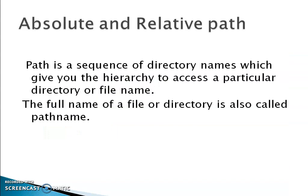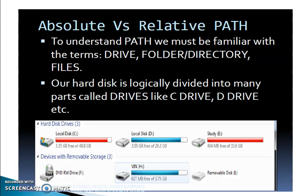The next topic is absolute and relative paths. The full name of a file or directory consists of path/primary_name.extension. Path is a sequence of directory names which give you the hierarchy to access a particular directory or file. The full name of a file or directory is also called pathname. Now let us look at drives, folders, directories and files in this picture.